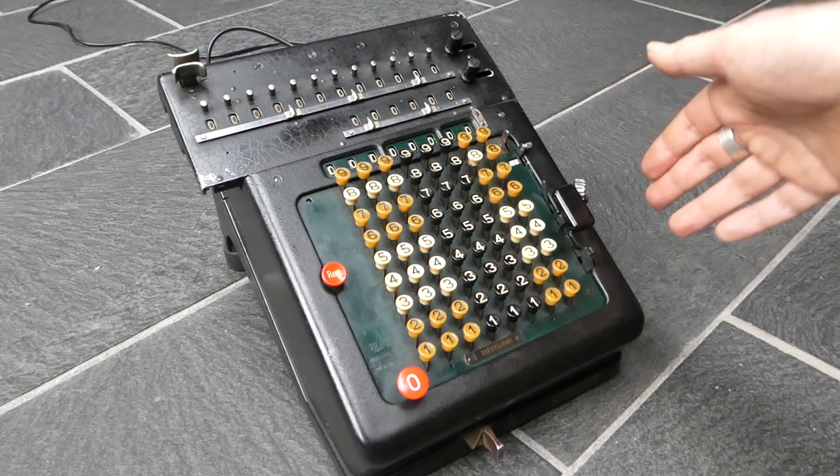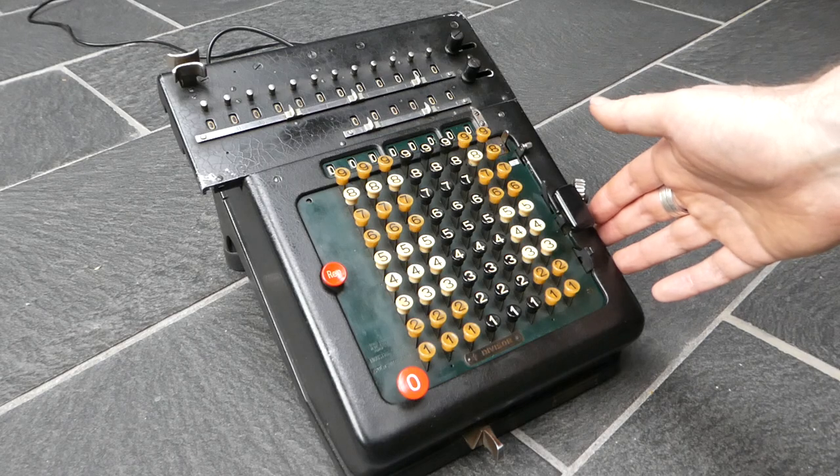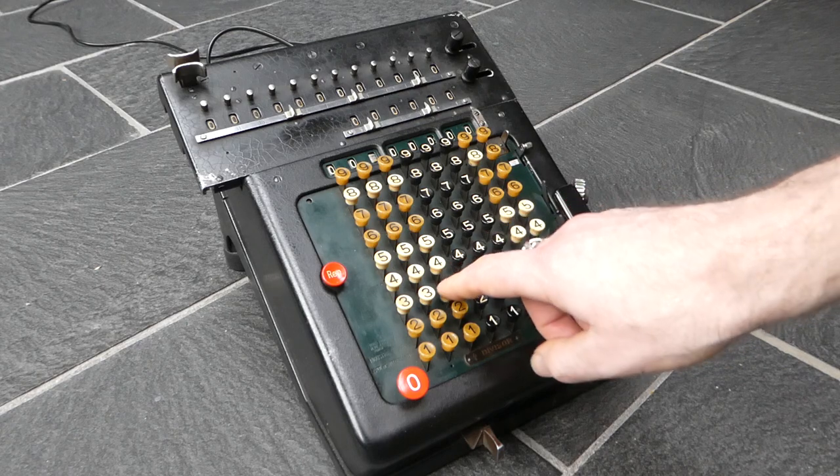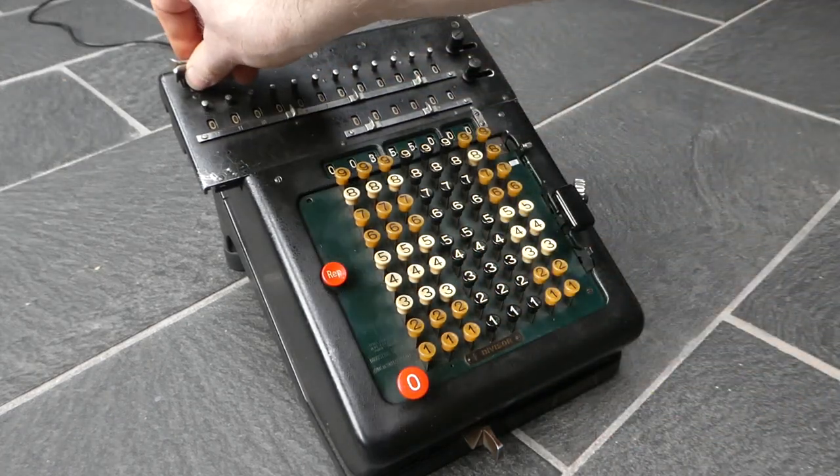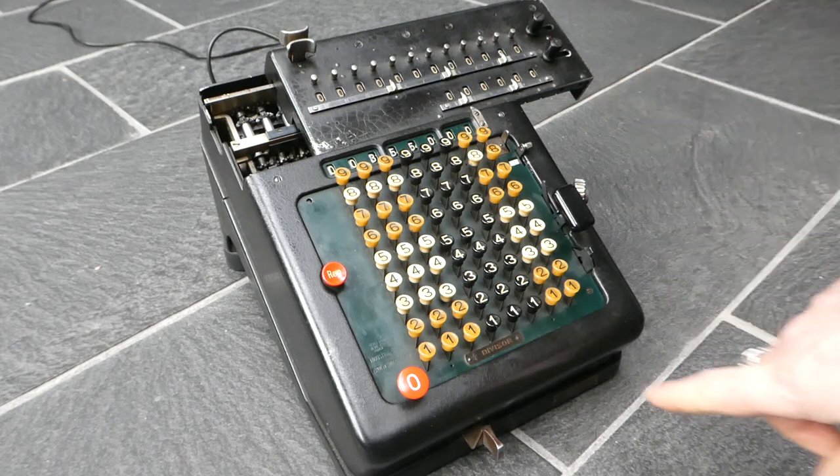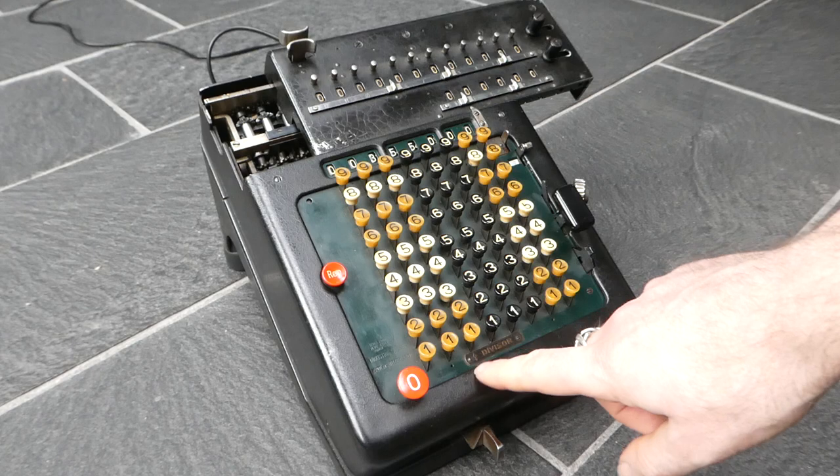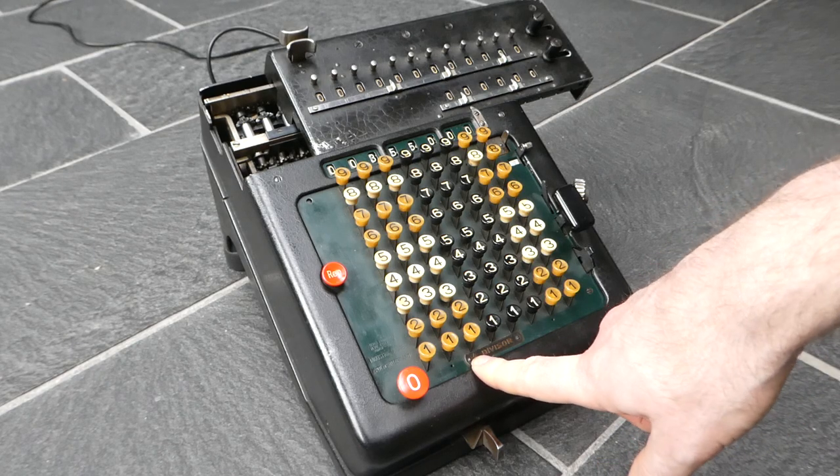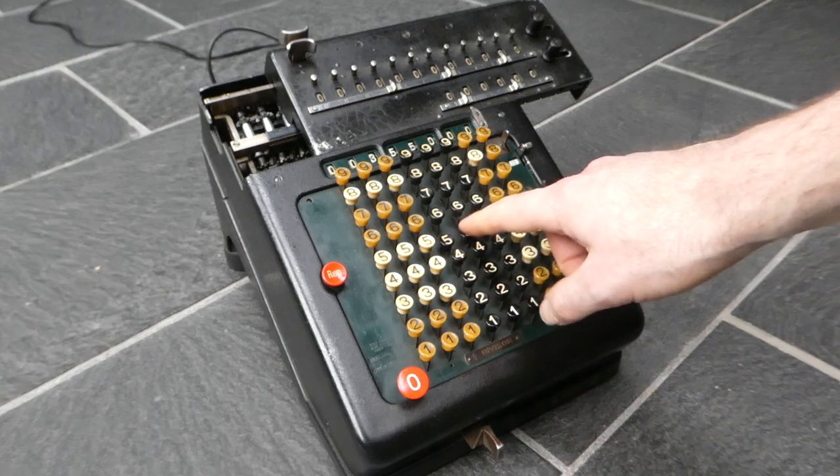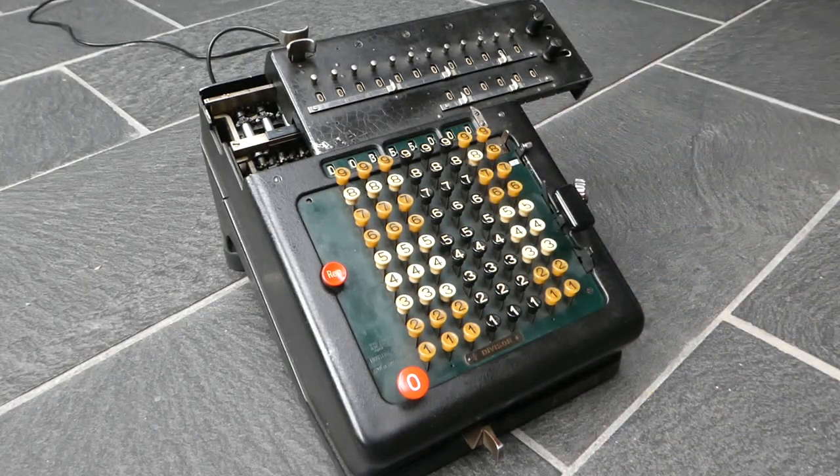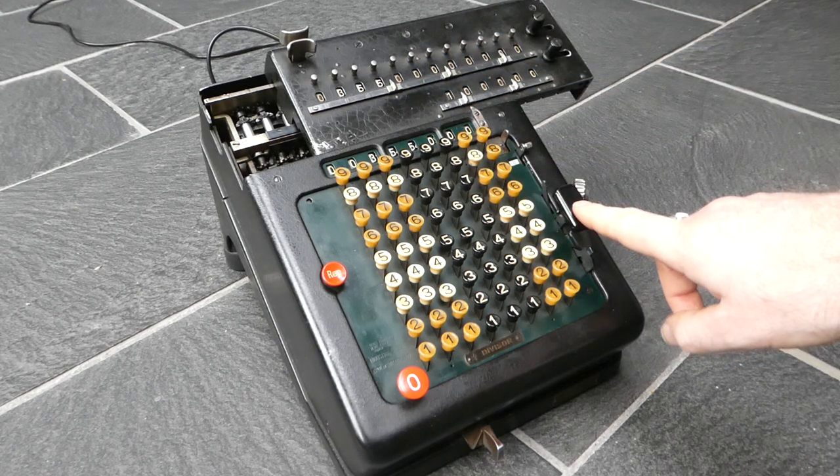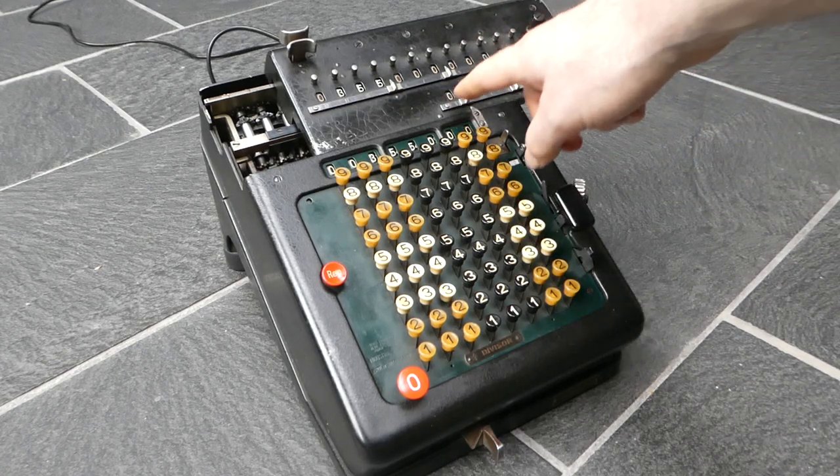You can also do division, and that's a little bit more complicated. Let me just shift it all the way to the right. As you can see it says here with an arrow where you have to enter the dividend and the divisor. You have to start from this column. So I'll enter this number into the main register and clear this counter.